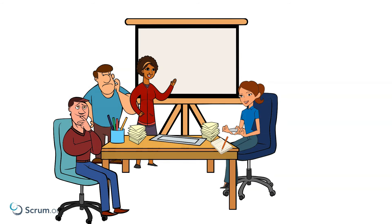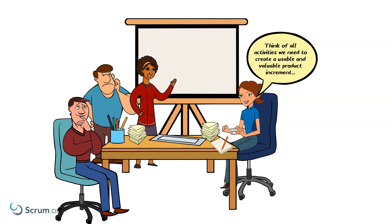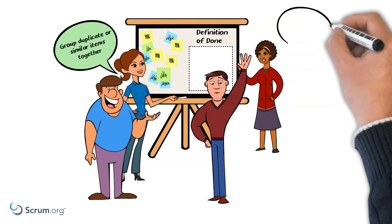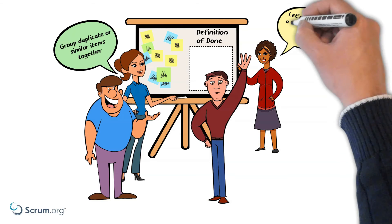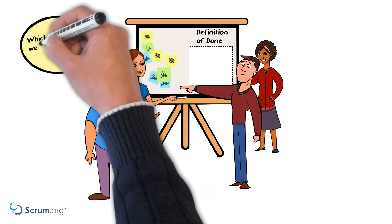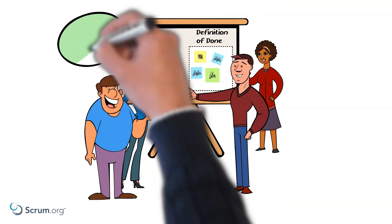Now that everyone knows the difference between acceptance criteria and the definition of done, Robin asks everyone in the team to individually think and write down on a sticky note all the things they can think of that are needed to create a usable, valuable product increment, and add it to the board. Once done, the team groups any duplicates or similar items. Robin allows time for team members to ask questions and discuss items that need further clarifying. It is then time to agree which items should be included in the definition of done, and they do a vote to ensure everyone agrees.